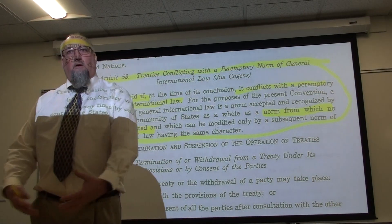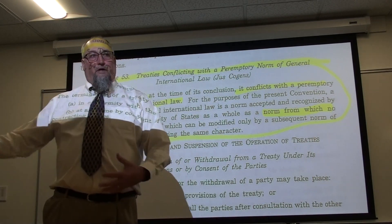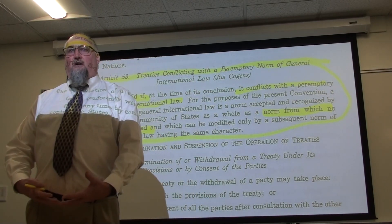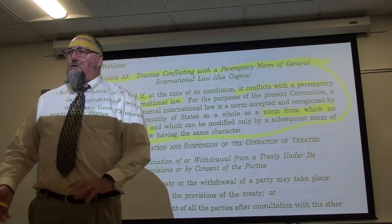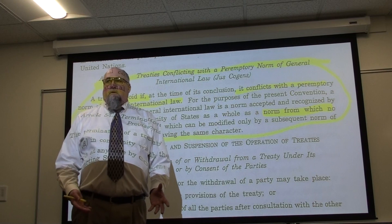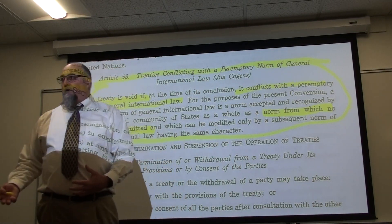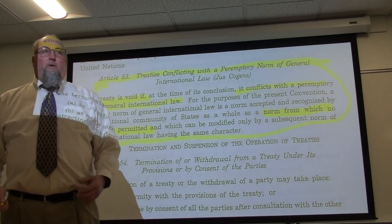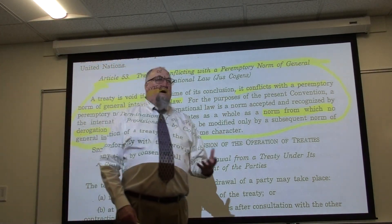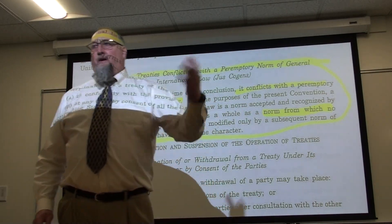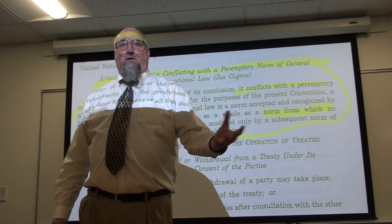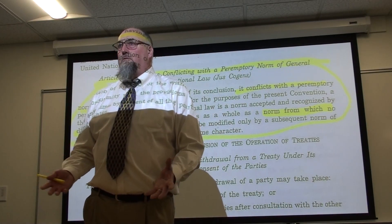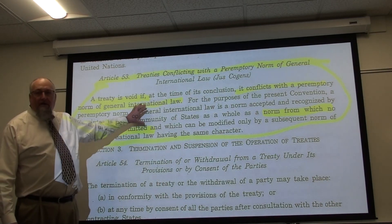Even though every state possesses the right to enter into a treaty, if two states agreed to engage in genocide, that treaty is void because it violates a peremptory norm of international law. We have the same rule domestically — a contract to sell heroin or an assassination contract is void because it's illegal. Article 53 establishes that no treaty can override a peremptory norm; the peremptory norm is always the pinnacle of international law.